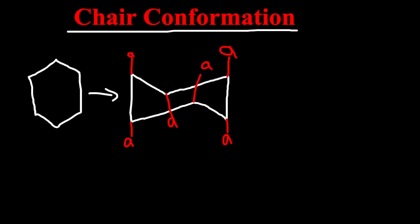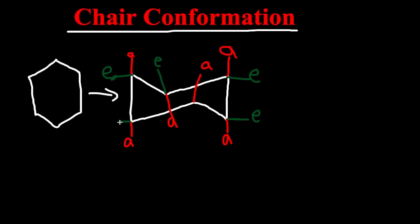Now we have another side called the equatorial side. Equatorial would be on this right here — E for equatorial. So this is the axial and equatorial layout.